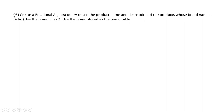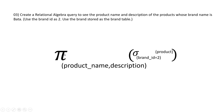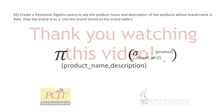In the final question, we have to write a relational algebra query to see product names and descriptions of Bata branded products. As you can now see, this is my answer to this question. We are using the phi symbol, which means projection, and the Sigma symbol, which means selection. And that's all I had to answer in today's question set — see ya!